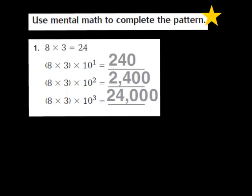Let's start out by taking a look at question number 1. They give us the problem 8 times 3 equals 24. That 8 times 3 equals 24 is called our basic fact. We're going to use our basic facts in this lesson and a pattern to help us find our products.